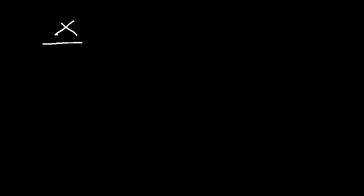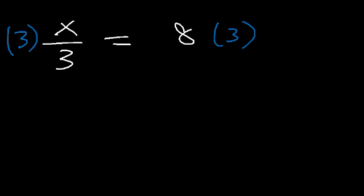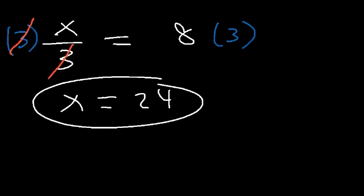Now what if you were to get an equation that looks like this: x divided by 3 is 8. What do we need to do to get x by itself? The opposite of division is multiplication, so we need to multiply both sides by 3. 3 divided by 3 is 1, so those numbers will cancel. 8 times 3 is 24. And that's all you need to do for that problem.